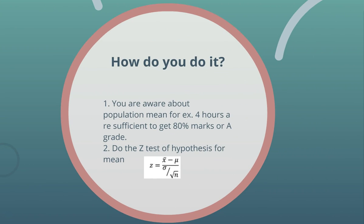Now let's see how you actually do it. The assumption here is that you are aware of the population mean — for example, studying four hours a day gives you 80% marks. You then perform a Z-test, which is: Z = (x̄ − μ) / (σ / √n), where x̄ is the sample mean, μ is the population mean, σ is the standard deviation, and n is the number of values in the sample. This formula gives you the Z-statistic.